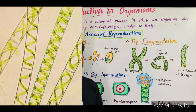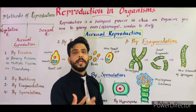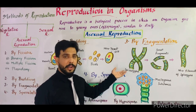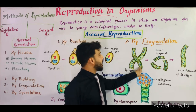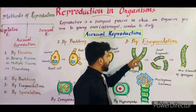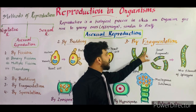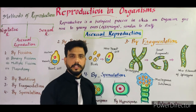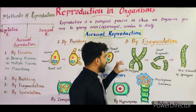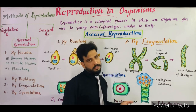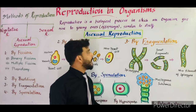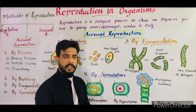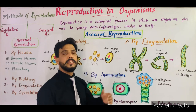Spirogyra is also known as pond silk, as it shines like silk — hence the name. These are the filaments of Spirogyra, and these are the cells of Spirogyra, which consist of a single nucleus and a ribbon-shaped chloroplast. Spirogyra reproduces with the help of fragmentation, which is a method of asexual reproduction.